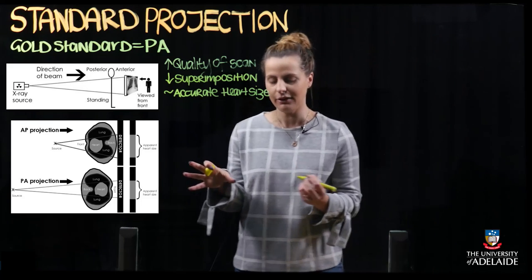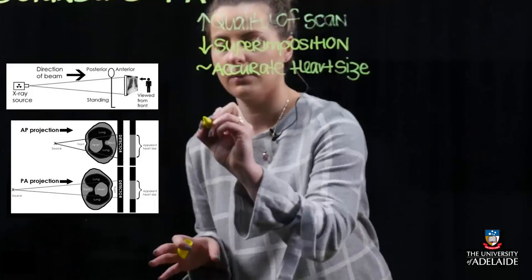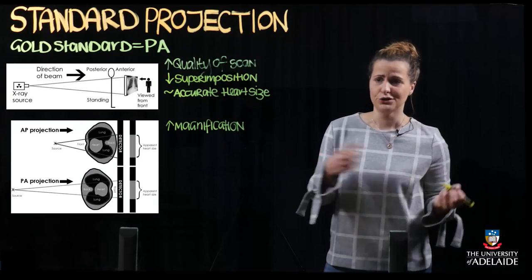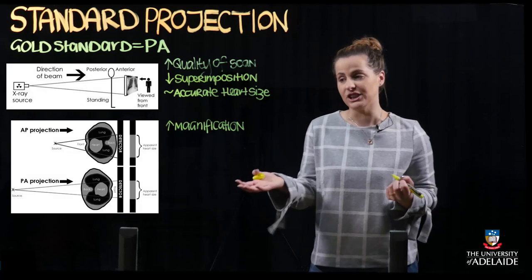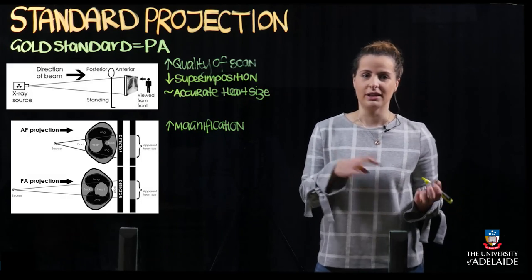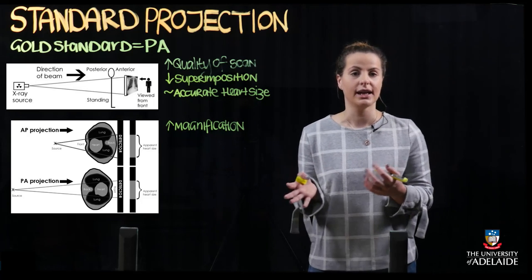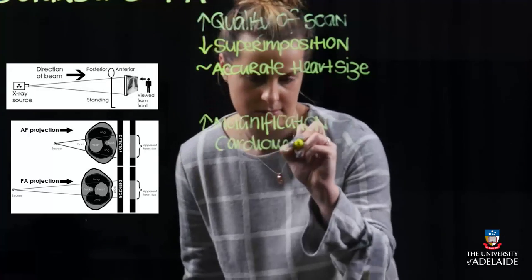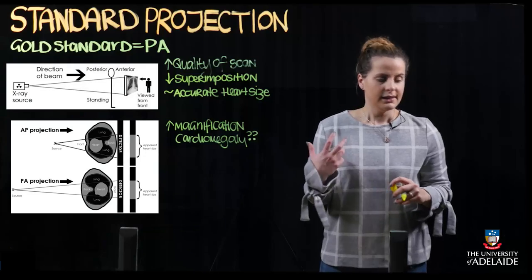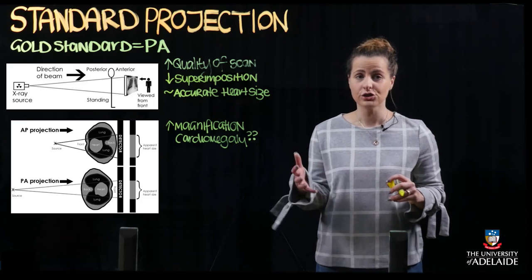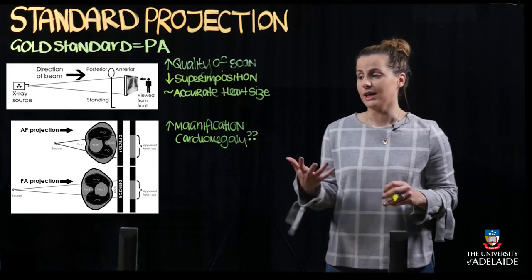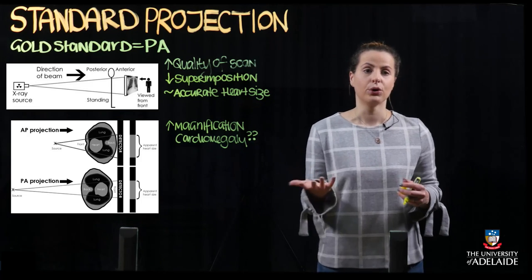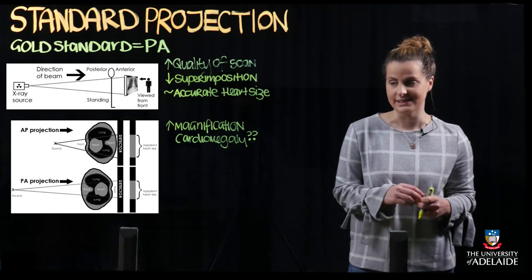On the AP view, increased magnification will suggest that the patient has cardiomegaly; however, this is actually just an artifact associated with scan quality and not representative of pathology. The lung appearance is also going to be a lot more dense and the borders are going to be a little bit harder to differentiate or distinguish.